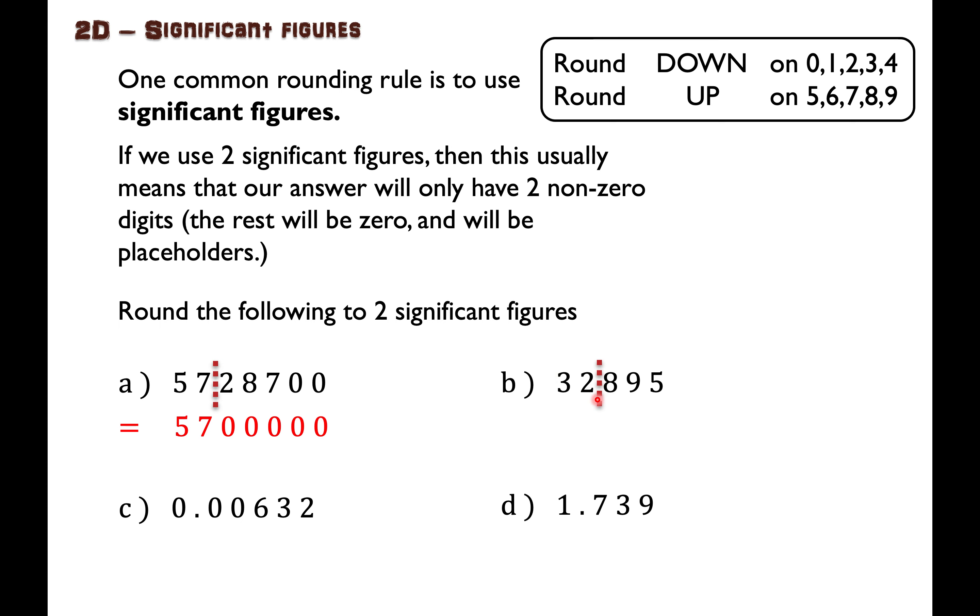I look to the right. I've got an eight and on an eight I round up. So this number here instead of being 32 it will go up to 33 and the rest will become zeros. I really would recommend putting the dotted line. I find when I'm marking students who do that, they generally get high marks just because they get it right more often.